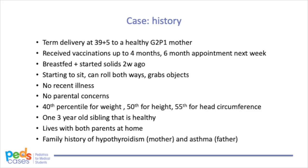He is at the 40th percentile for weight, 50th for height, and 55th for head circumference. He has one sibling who is 3 years old and healthy, and lives with both parents at home. His father has asthma and his mother has hypothyroidism. The rest of the family history is unremarkable.